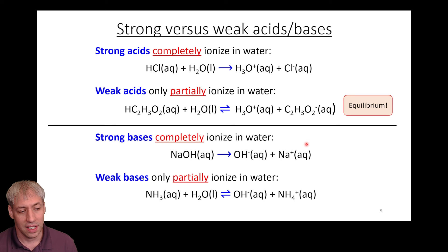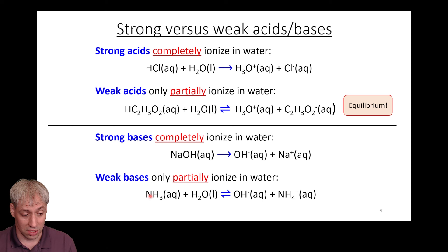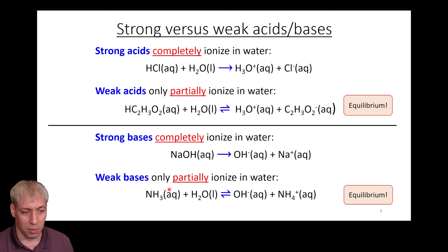The same thing is true with strong bases. A strong base completely ionizes in water: NaOH gives you OH- plus Na+. A weak base is only partially ionized in water. Take ammonia NH3 in H2O — we have an equilibrium arrow because it gives some OH- and NH4+, but some of it stays as NH3. Just like with equilibrium in general, we have an equilibrium constant to describe this.